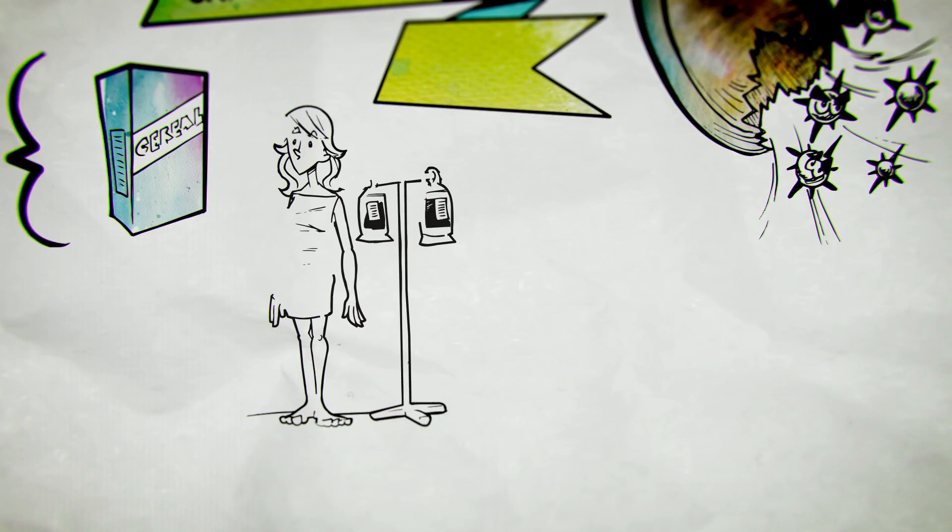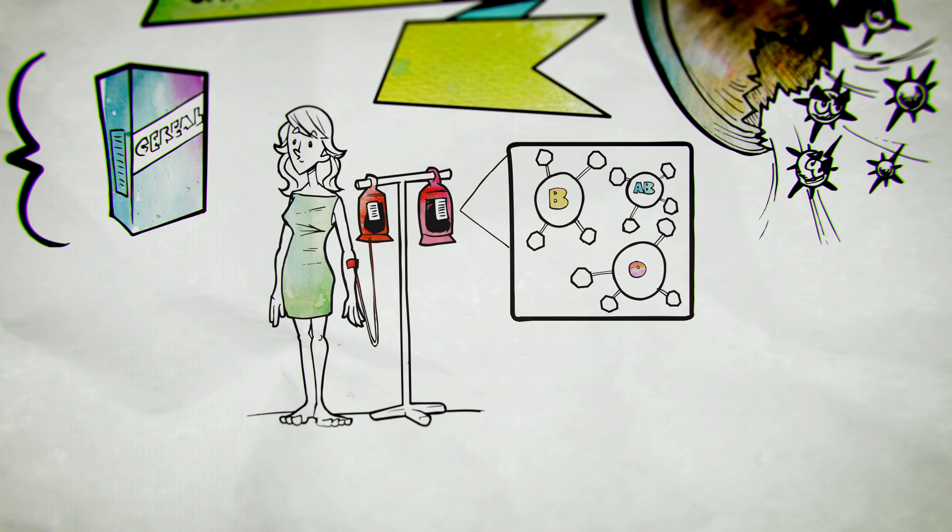Receive a blood transfusion? The type of glycans on the surface of your blood cells are what determine your blood type.